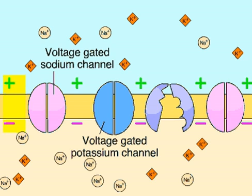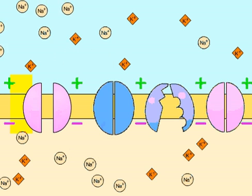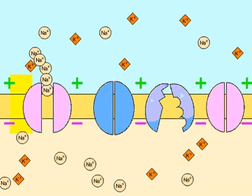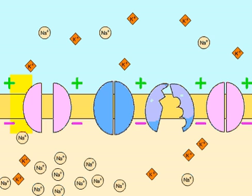A stimulus causes voltage-gated sodium channels to open and sodium ions rush into the cell. The cell becomes positive on the inside and negative on the outside.